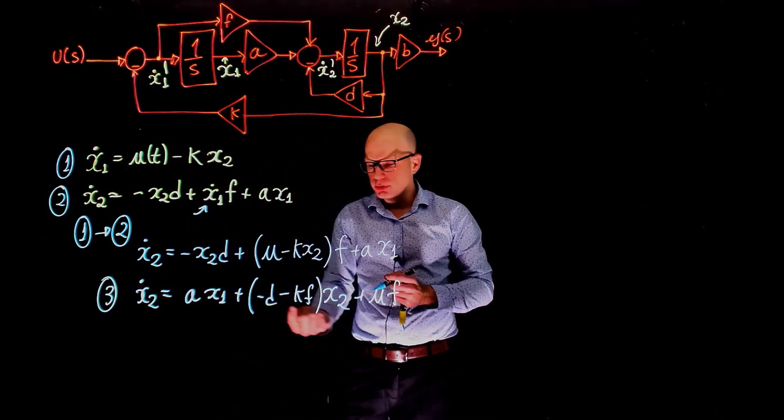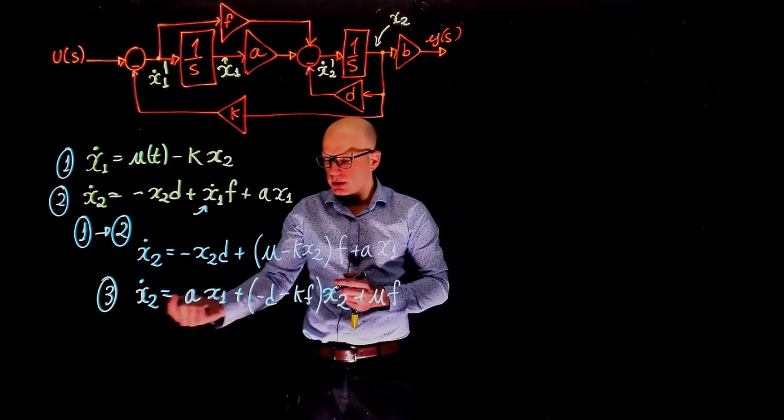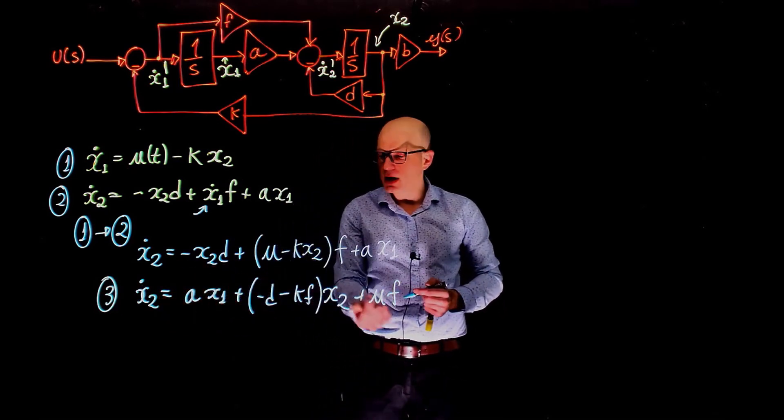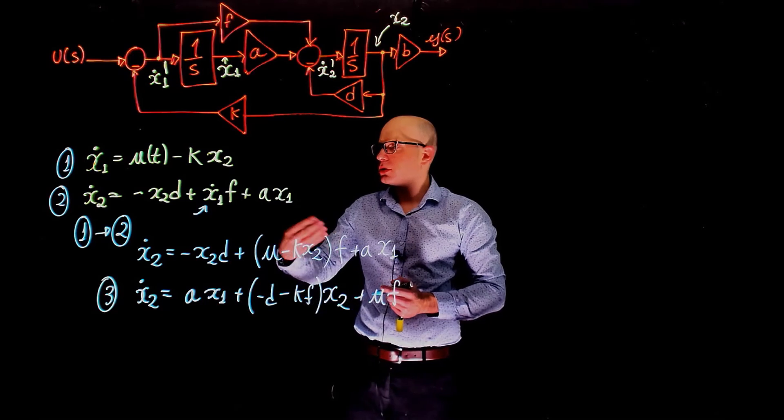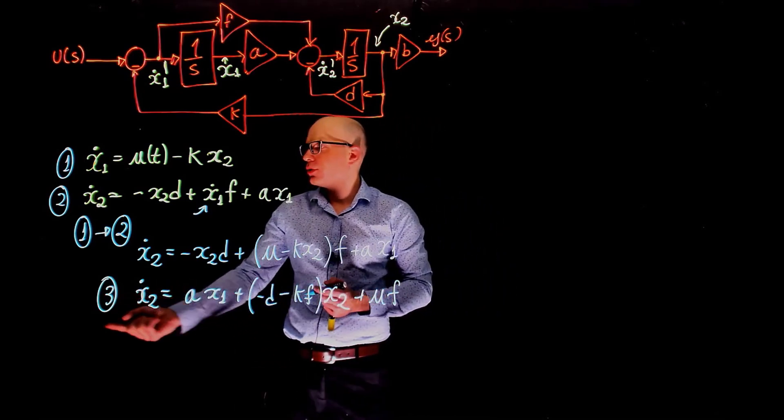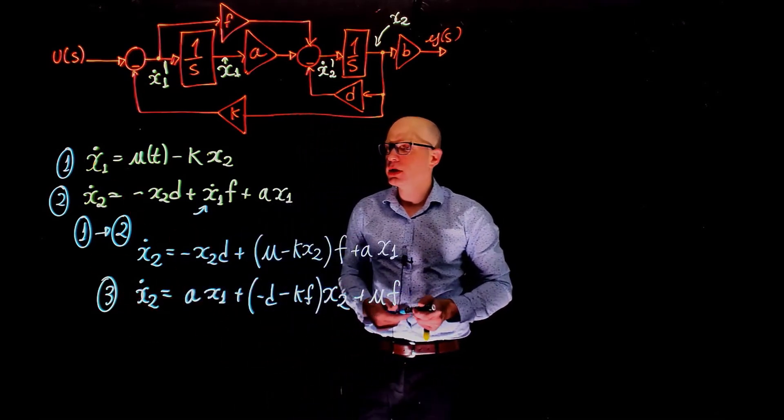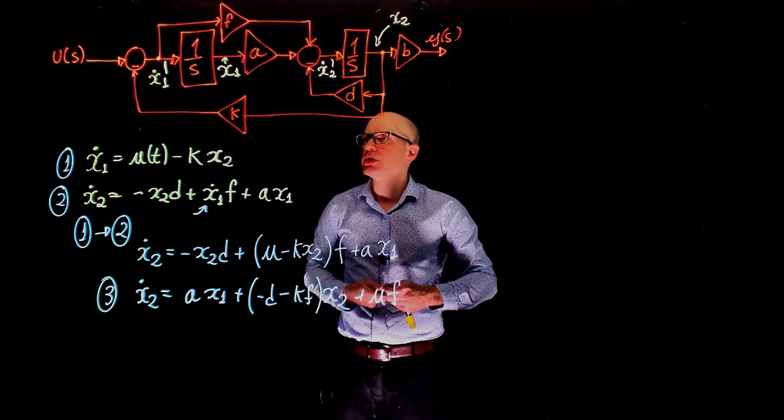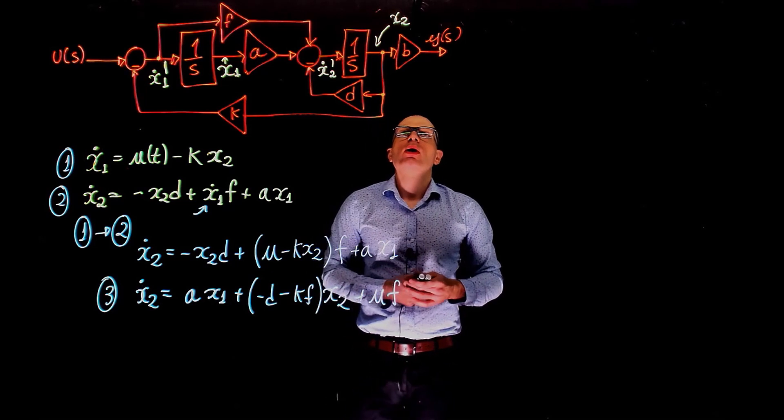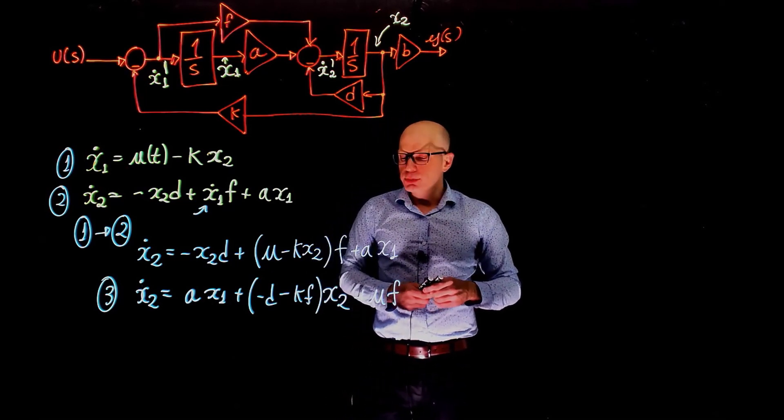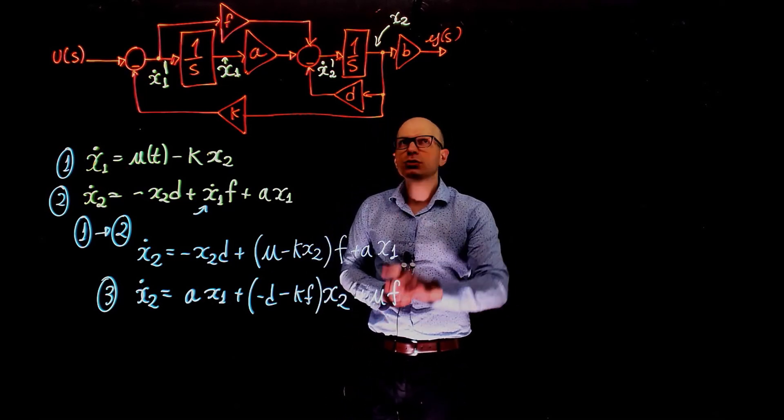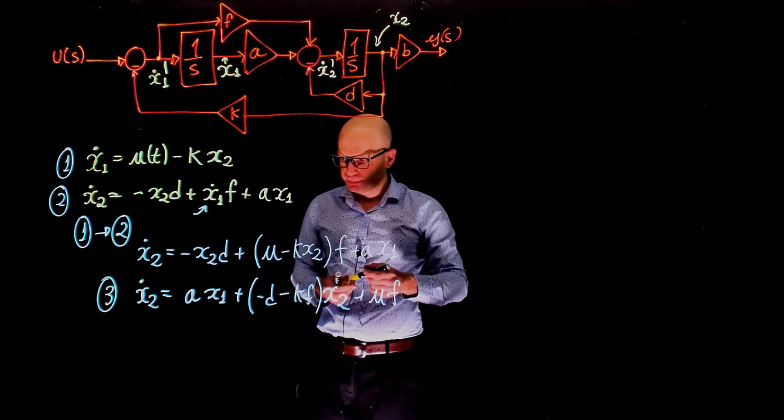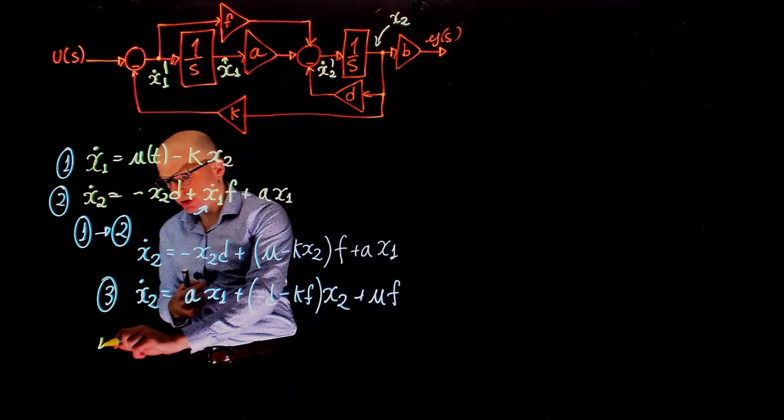And here we have the third expression. This is the expression for x2 dot. Now notice that x2 dot is only a function of the states themselves, and not their derivatives. So equation three and equation one are sufficient now to come up with the state-space matrices for this system. We also need to identify the output. We know that the input is u, the output is y. So what is the output?